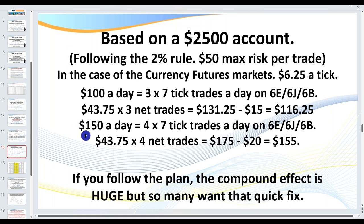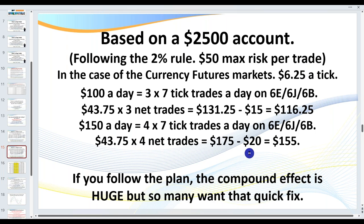If you wish to average around $150 a day you need four seven-tick trades a day. That is $43.75 per trade — seven ticks by $6.25 a tick. So that's $43.75 by 4, which is $175. The commissions depend on your broker, somewhere between $4.50 and $6 — let's just take an average of $5. So there's your net $155. If you follow the plan, the compound effect is huge, but once again everyone wants that quick fix.